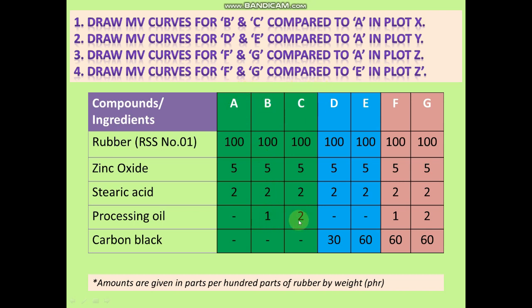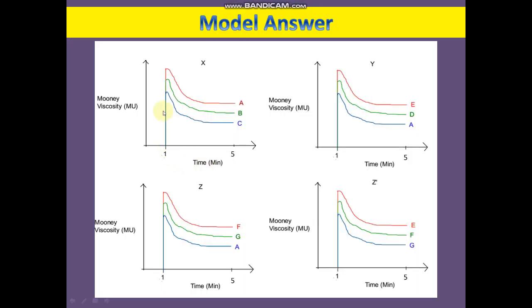The only difference among compounds A, B, and C is the amount of processing oil. Compound A doesn't contain processing oil, B contains processing oil at 1 phr, and C contains 2 phr of processing oil. The basic principle to keep in mind is that once we include oils in rubber compounds, it reduces the Mooney viscosity value — increasing the amount of processing oil reduces the Mooney viscosity further.